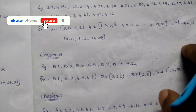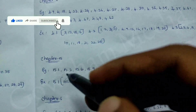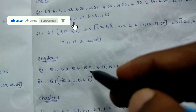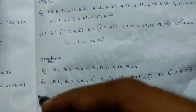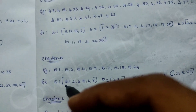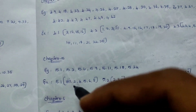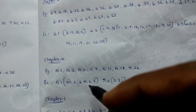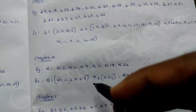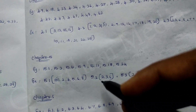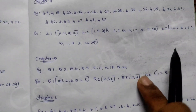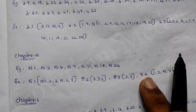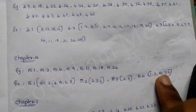Let's start with the 5th chapter. The following are the examples: 5.1, 5.2, 5.6, 5.9, 5.11, 5.18 and 5.24. Exercise: 5.1 — 2nd sum, 4th sum, 5th sum, 6th sum, 8th sum. 5.2 — 2nd sum, 3rd sum, 6th sum. 5.3 — 2nd sum, 3rd sum. 5.4 — 1st, 2nd, 5th, 7th, 9th.